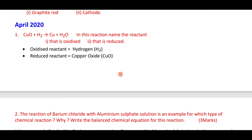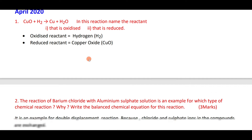In the reaction CuO plus H₂ gives Cu plus H₂O, the reactant that is oxidized is hydrogen, because oxygen is added to H₂. Therefore the oxidizing reactant is hydrogen. The reduced reactant is copper oxide — CuO is reduced to Cu.